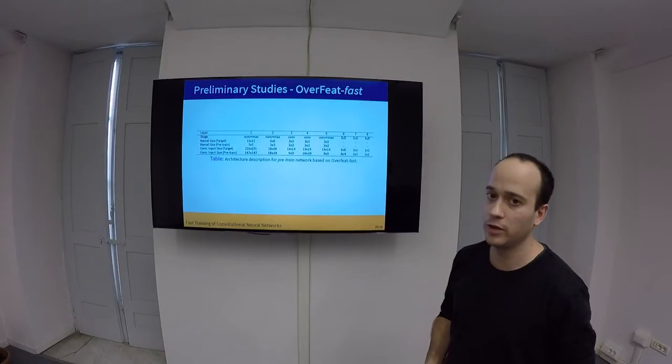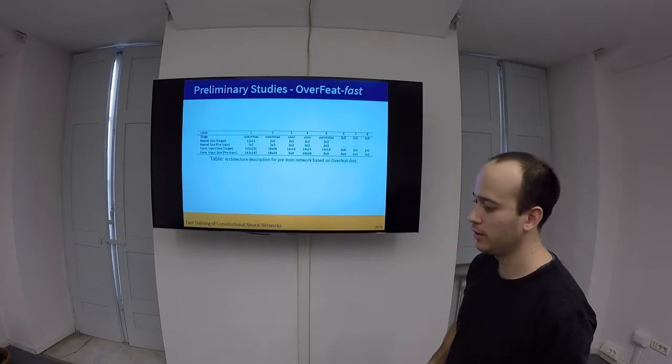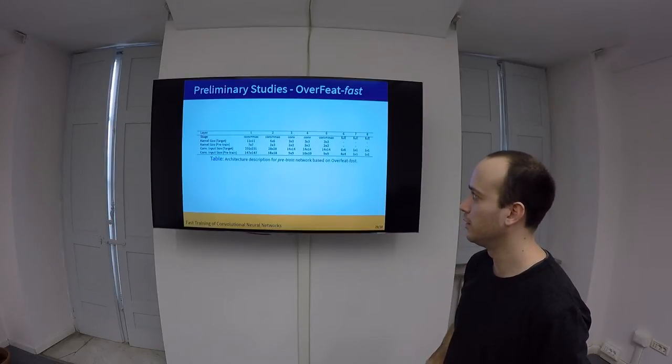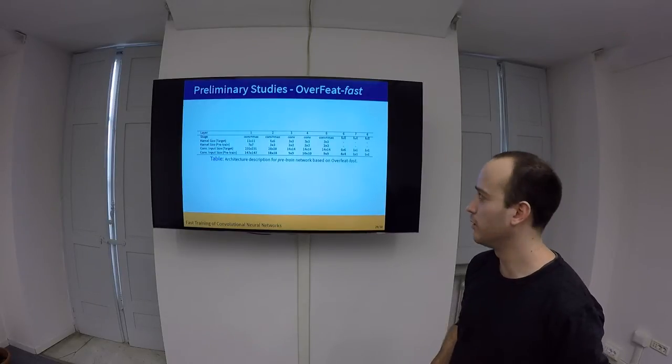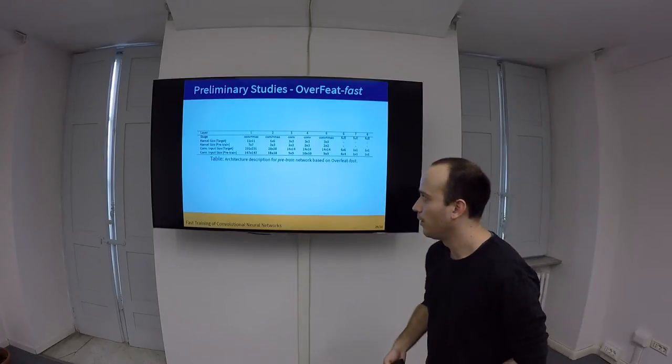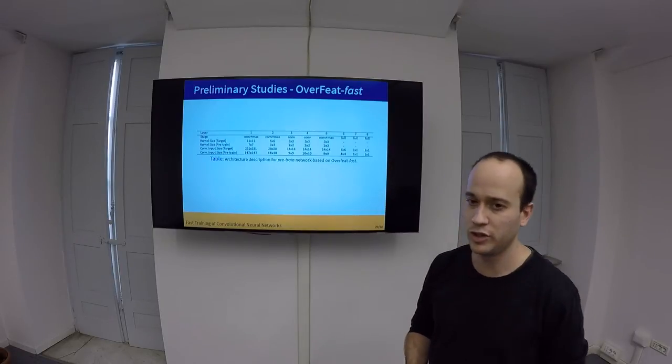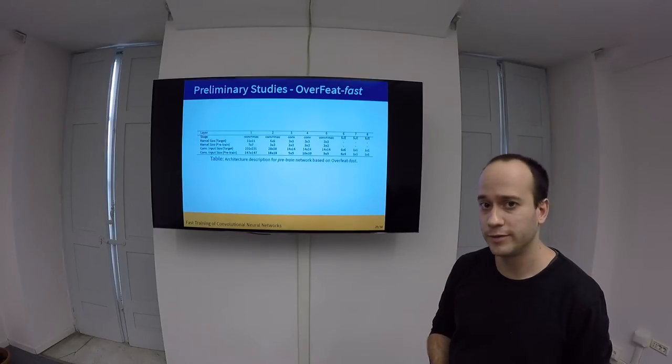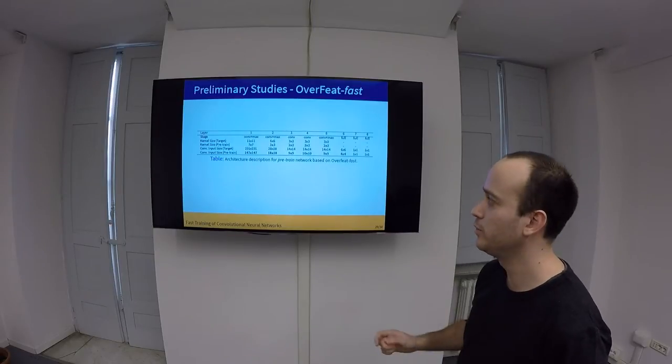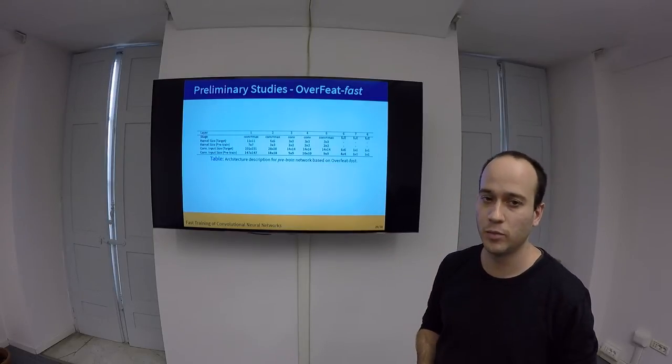So, the first step, we downscale these kernels. The 11x11 becomes a 7x7 layer, the 5x5 now uses 3x3, and all the ones that use 3x3 now use 2x2. And we also have to downscale the input image. Originally, we would be using 231x231 image, and now we're using 147x147. You can see that the ratio between each input and each modified kernel size is more or less the same.